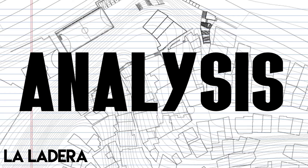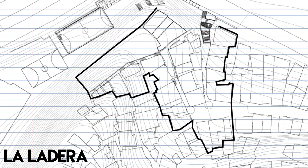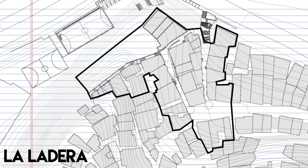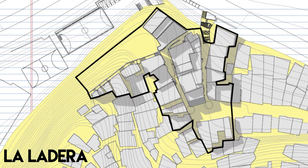Now we are ready to identify the variables of the site. To start, we need to analyze more context than the specific place of the project. To do this, we need to define a large polygon of work. Inside, we're going to identify the use of spaces like houses, public space, and businesses, the height of the buildings, and finally circulation.